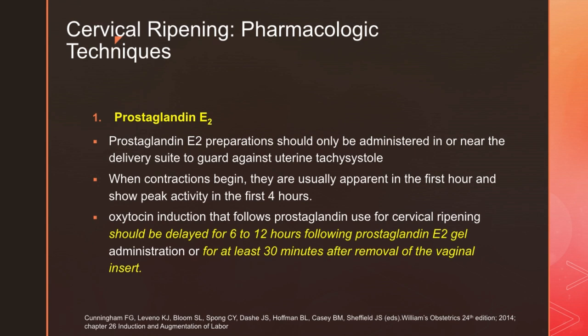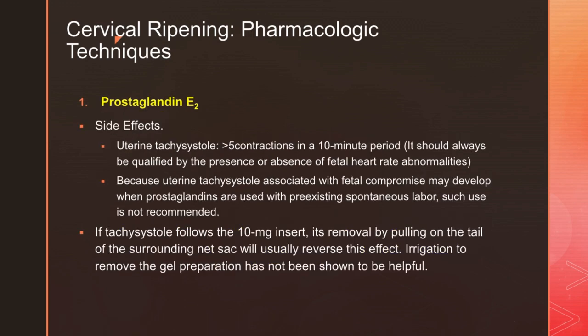Prostaglandin preparations should only be administered in or near the delivery suite to guard against uterine tachysystole. When contractions begin, they are usually apparent in the first hour and show peak activity in the first four hours. Oxytocin induction that follows prostaglandin use for cervical ripening should be delayed for six to 12 hours following prostaglandin E2 gel administration, or for at least 30 minutes after removal of the vaginal insert. The most common side effect of dinoprostone is uterine tachysystole, defined as more than five contractions in a 10-minute period, and it should always be qualified by the presence or absence of fetal heart rate abnormalities. Because uterine tachysystole associated with fetal compromise may develop when prostaglandins are used with pre-existing spontaneous labor, such use is not recommended.